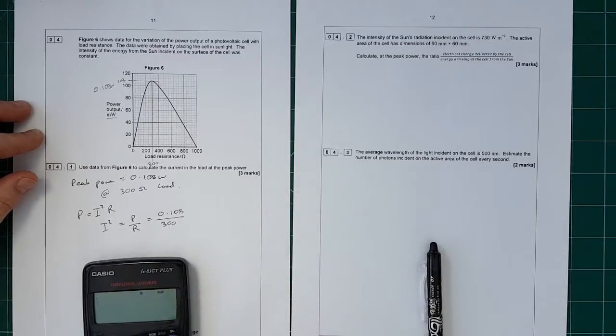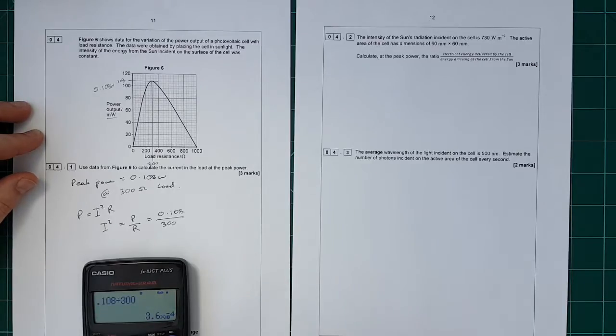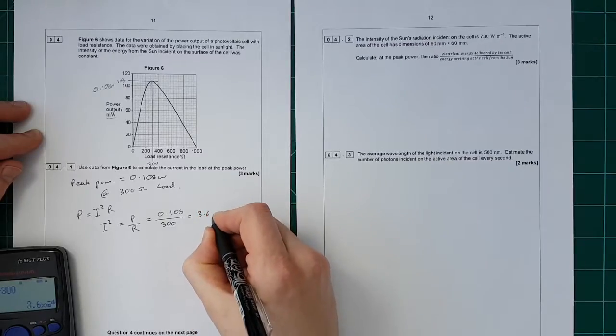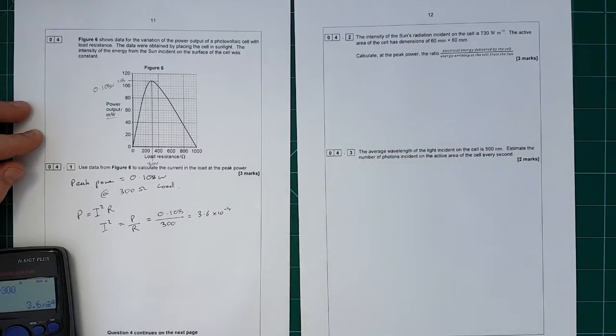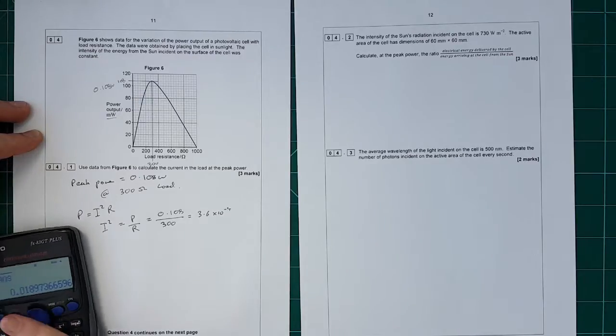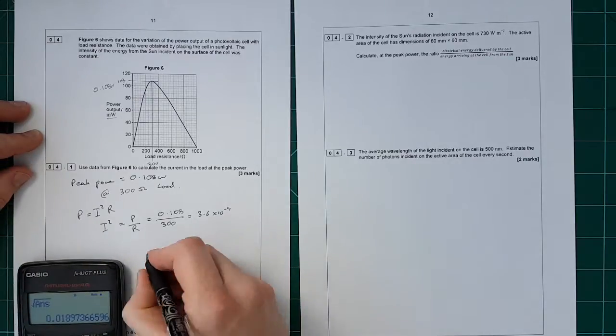That gives you 0.108 divided by 300. 3.6 × 10⁻⁴, and we need to square root that in order to get the answer for I.